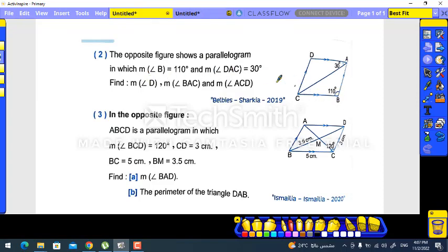Here, measure P is 110, measure DEC is 30, find measure D. At first, D equals what? D is opposite to B, so it will be 110. And angle BAC...